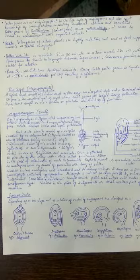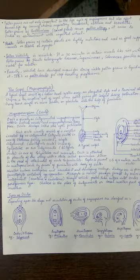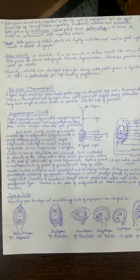Next is the viability of pollen grain is variable from plant to plant or from families to families. The viability of the pollen grain is variable. It can be 30 minutes in certain plants like the rice and wheat.